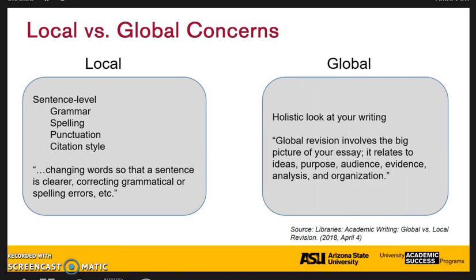Global concerns take a more holistic look at your writing. This means you are looking at the big picture of your writing, thinking about things like thesis statement, ideas, purpose, audience, evidence, analysis, and organization. The distinction between local and global can help writers make decisions about what to look at first in their writing, second, etc.